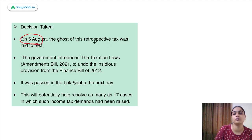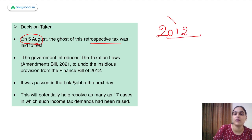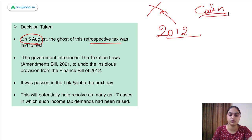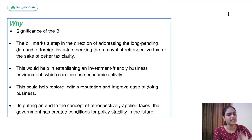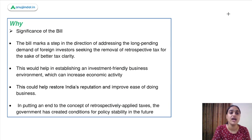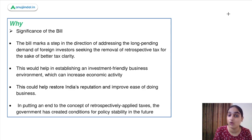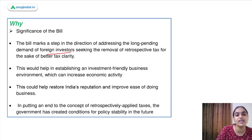The decision was taken on 5th August to put this retrospective tax to rest. Transactions that happened before 28th May 2012 will not be taxed. Vodafone and other cases like that of Cairn Energy — around 17 such cases — are now in a favourable position. There were a lot of problems from retrospective tax, making investors in India less confident. The bill marks a step in the direction of addressing the long-pending demand of foreign investors to remove this retrospective tax.